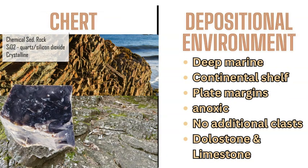Chert is a sedimentary rock made mostly of silicon dioxide (silica), involving lots of quartz, and can also form within limestone beds or strata. Chert is formed through anoxic environments, with plate margins, continental shelves, and usually very deep ocean or deep marine environments — because you need no additional elements to form the chert, and an anoxic environment is required.